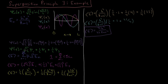If we had a system in this state and measured the energy of a million systems all in this state, this is the number we would get on average. But what values can we actually get when we make the measurement? According to postulate 3, the only values we can get are the eigenvalues of the Hamiltonian.